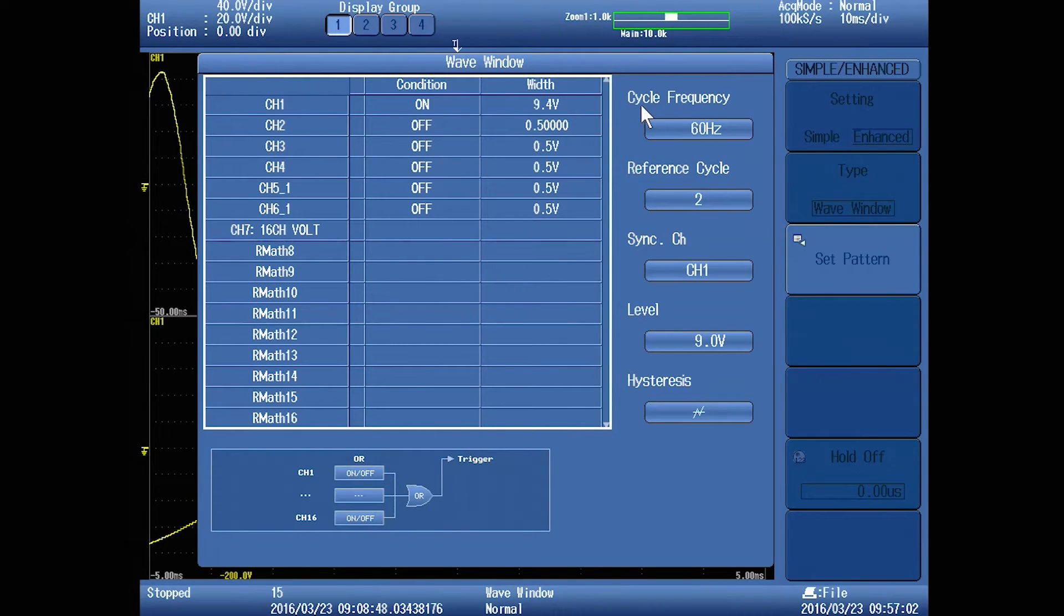You need to tell the wave window trigger the cycle frequency, in our case 60 hertz, and the reference cycle. That means it's going to use two full sine waves as the reference template. And again, we're telling it to watch only channel one. That's the wave window trigger settings.